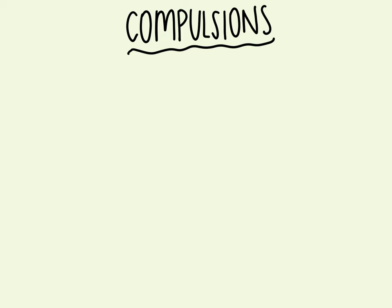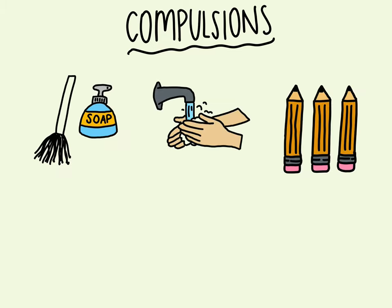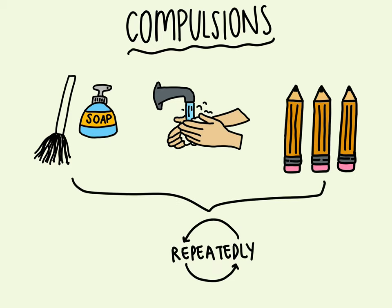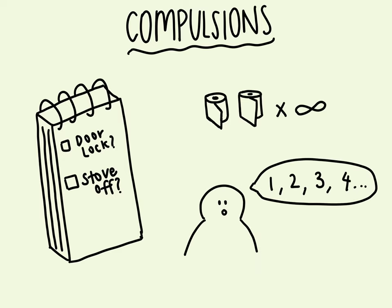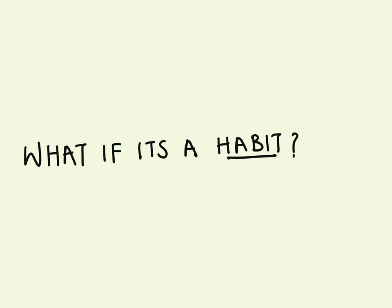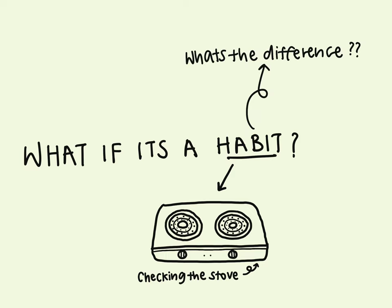Compulsions are repetitive behaviors that those affected by OCD feel the urge to do in response to an obsessive thought, to gain relief. Common compulsions include excessive cleaning or hand washing, organizing and arranging things in a specific way, and repeatedly ensuring they have done a task to relieve their anxiety — such as checking to see if the door is locked or the stove is off. Other examples include hoarding certain items or compulsive counting. But some of these things may just be a regular habit — it's a pretty good habit to check if your stove is off when you leave the house.